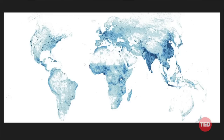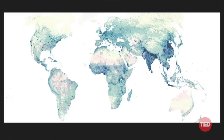This map shows you the present distribution of the world population — this is it, all of us. Wherever you are, you are a pixel on this map. There are eight billion pixels here. Now watch what happens, tragically, as climate change advances and as what is called the 'suitability' of a geography changes — in other words, the suitability for human habitation and survivability. What you just saw is an animation reflecting what's called the suitability index.